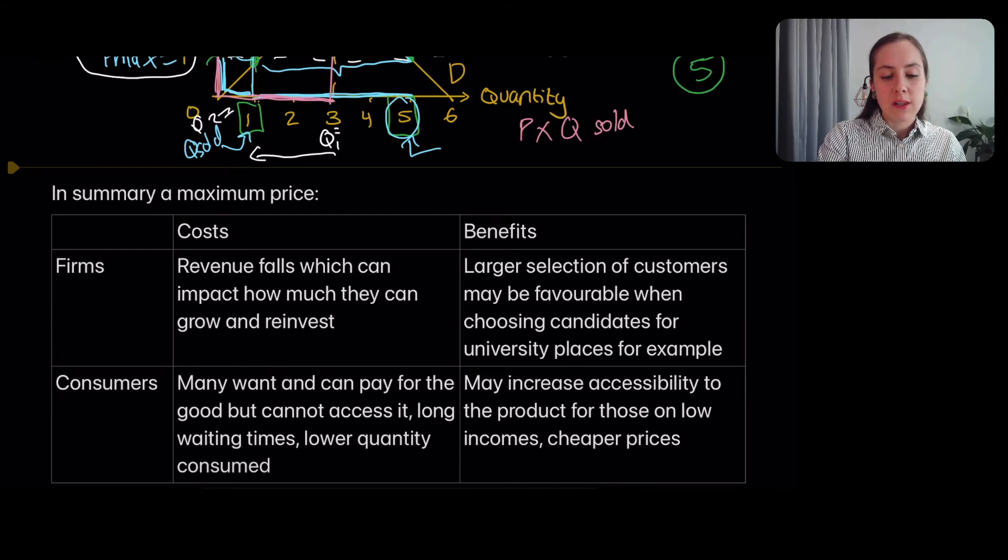The quantity sold right now is only Q2. So that's kind of odd because a maximum price decreases the price, but because it makes firms really demotivated, it actually ends up decreasing the quantity sold.